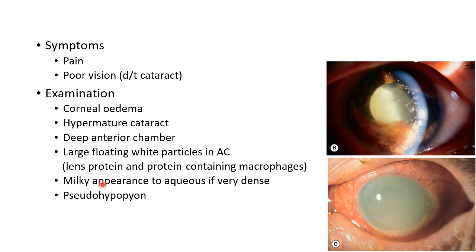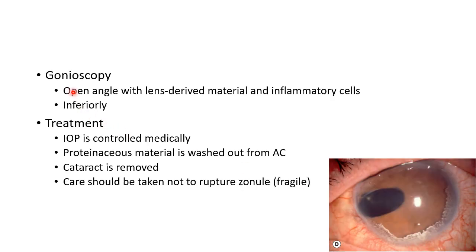These large floating white particles can give a milky appearance to the aqueous if they are very dense. There can also sometimes be formation of pseudohypopyon in cases of phacolytic glaucoma, as you can see in this picture. On gonioscopy it will demonstrate open angle with lens-derived material and inflammatory cells, usually in the inferior quadrant. Remember, gonioscopy will be tough because the view won't be adequate.